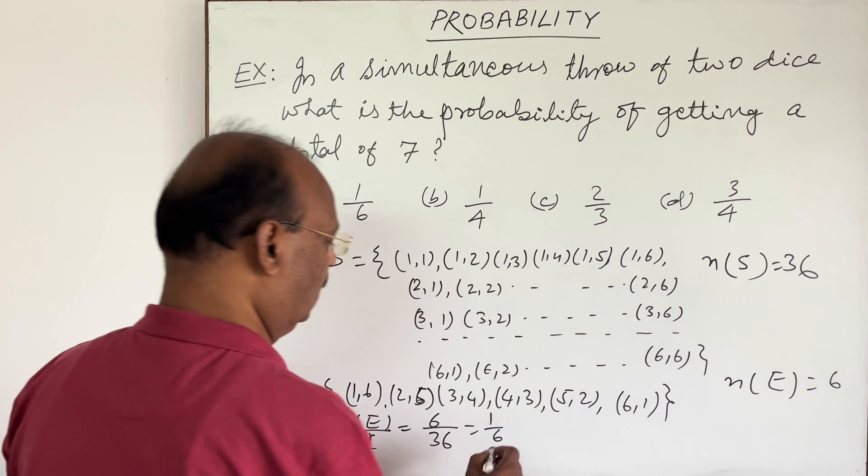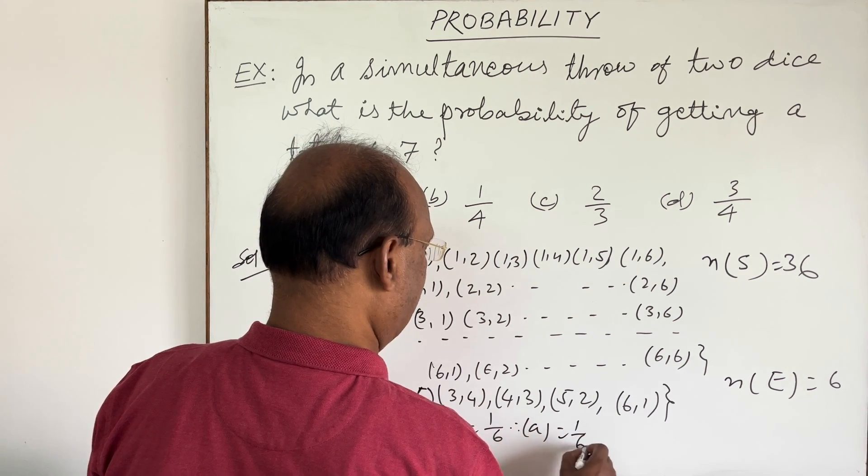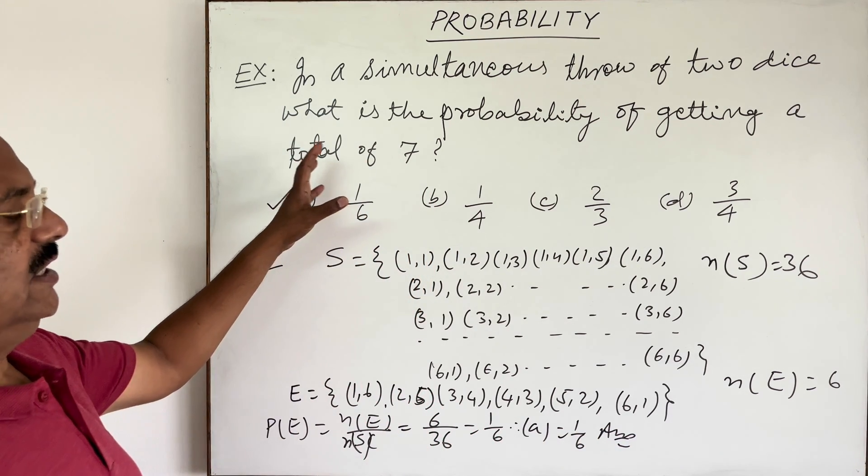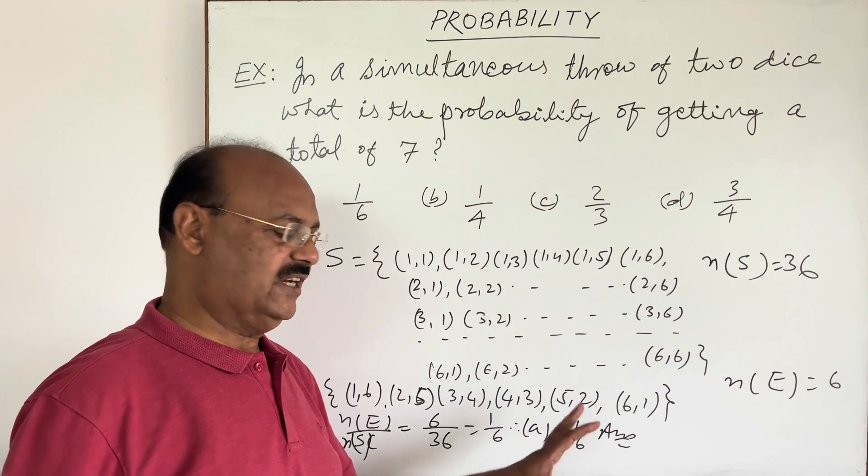Therefore, 1/6 is the correct answer. The probability of getting a sum total of seven is 1/6. Hope you have understood it very well.